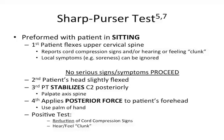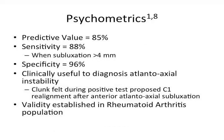With the patient's head slightly flexed, the PT stabilizes C2 posteriorly and applies a posterior force to the patient's forehead using the palm of their hand. A positive test is indicated by reduction of cord compression signs and/or the feeling of a clunk, proposed to represent C1 realignment after an anterior atlantoaxial subluxation. Psychometrics include a predictive value of 85%, sensitivity of 88% when subluxation is greater than 4 mm, and specificity of 96%. This test has been deemed clinically useful to diagnose atlantoaxial instability and its validity has been established in the rheumatoid arthritis population.